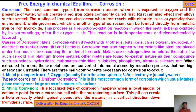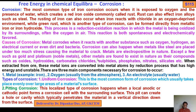What is the cause of corrosion? Metal corrodes when it reacts with another substance such as oxygen, hydrogen, electrical current, or even dirt and bacteria. Corrosion can also happen when metals like steel are placed under too much stress, causing a material to crack. Metals are electropositive in nature — except a few such as gold and platinum (noble metals). Other metals are found to exist in nature as their compounds such as oxides, hydroxides, carbonates, chlorides, sulfates, phosphates, nitrates, and silicates.